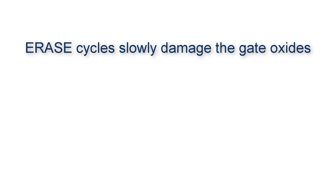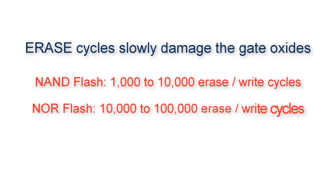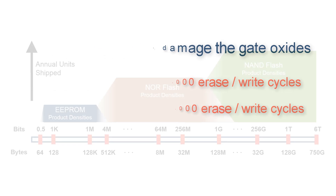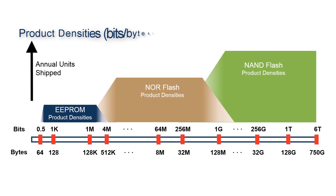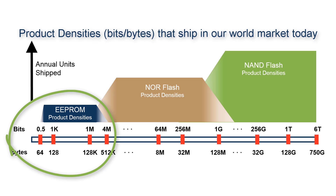Writing your flash slowly damages the memory structure — see our other videos to understand why. Most new NAND flash parts specify only 1,000 to maybe 10,000 erase-write cycles before destroying the part. The NOR flash number is more like 10,000 to 100,000.